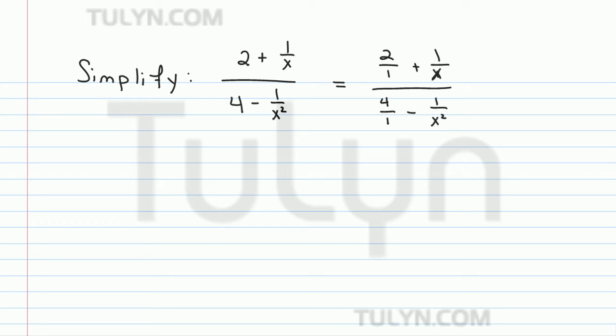So now in order to simplify this, the first thing we need to do is multiply the top and bottom by the LCD, the lowest common denominator, or the LCM, the lowest common multiple, of each of the denominators in the complex fraction.